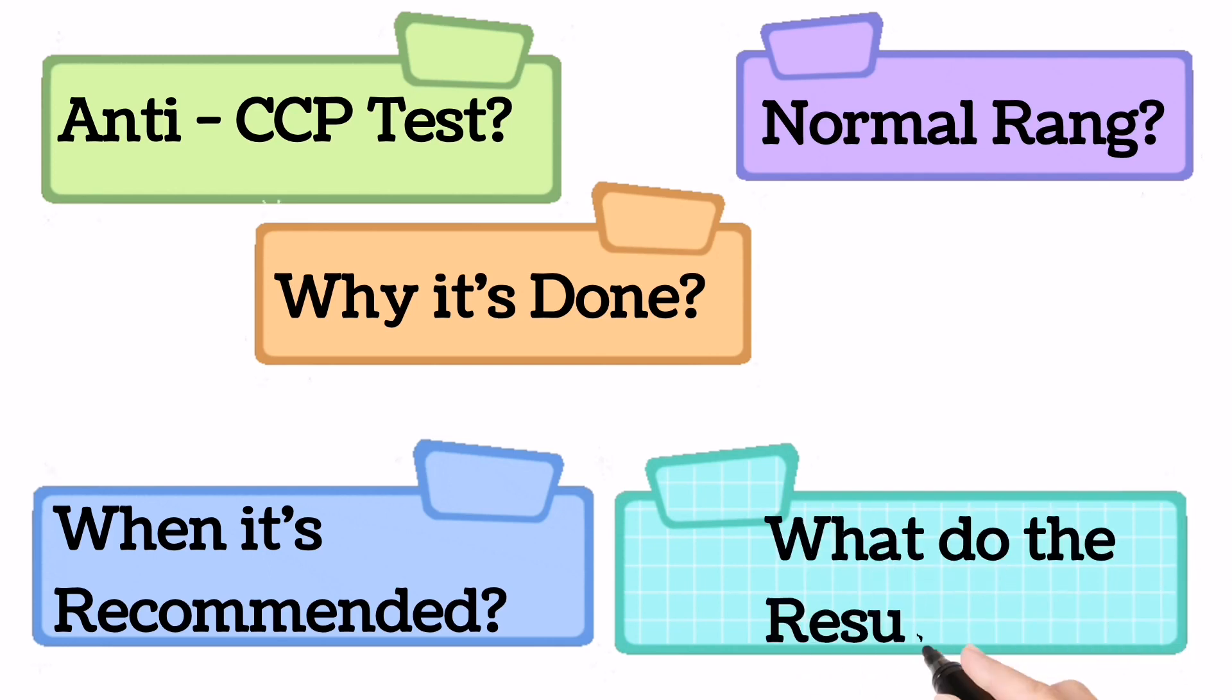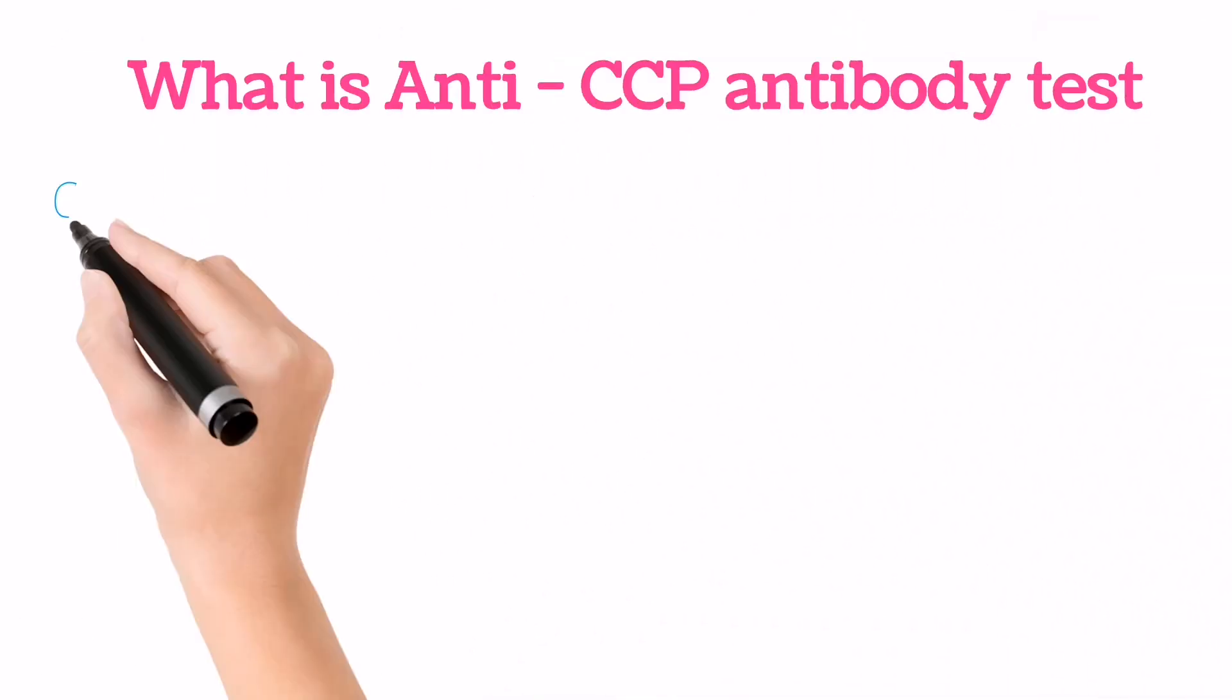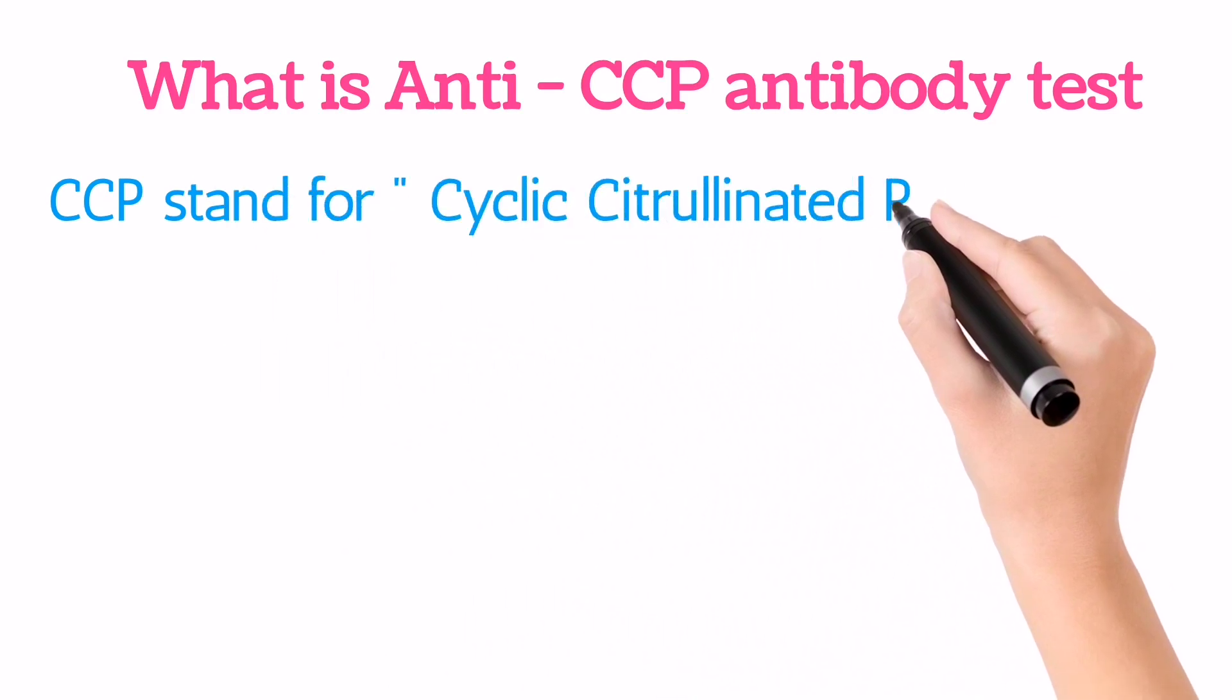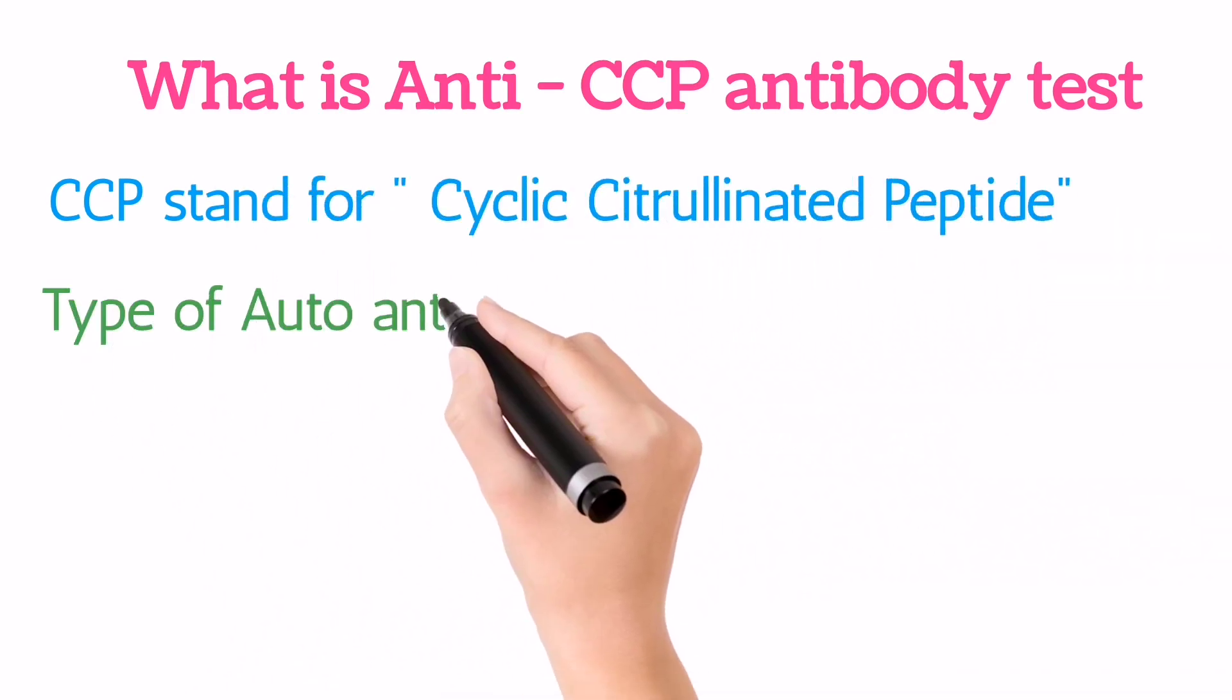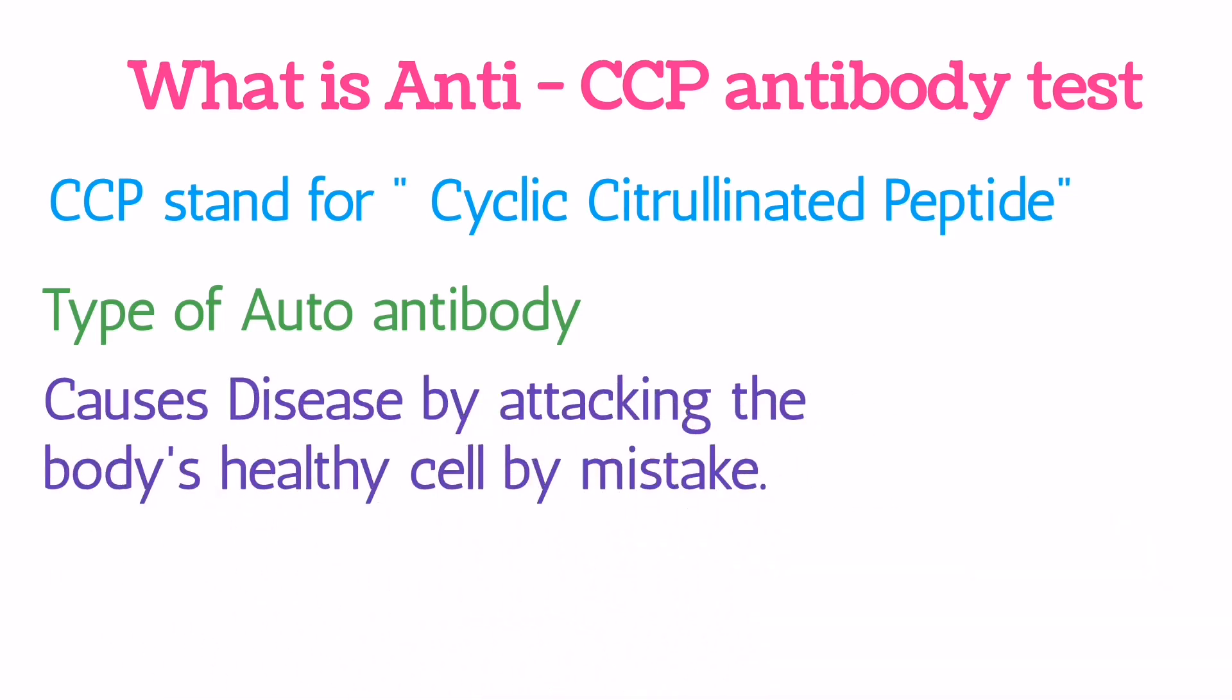So let's start the topic. First, CCP stands for cyclic citrullinated peptide. It is a type of autoantibodies that are released inside the body against the healthy cells and cause disease. This type of autoantibodies mostly target the tissue present in different joints of the body.